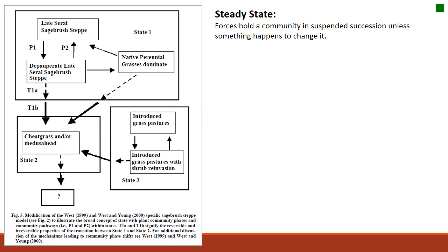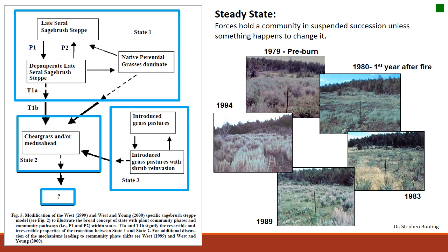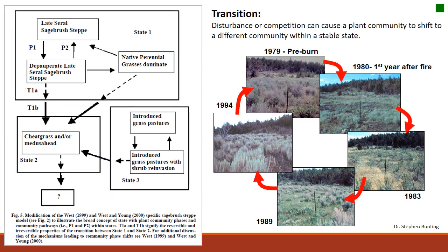Let's go through an example of a state and transition model in a sagebrush steppe ecosystem. Within this model, we have different steady states — a steady state refers to a community that's suspended in succession unless something drastic happens. In this example, we have four different steady states indicated by blue boxes. Within each steady state, we might have various vegetation dynamics. Transitions are disturbances or competitive events that cause the plant community to shift, but still stay within that stable state.